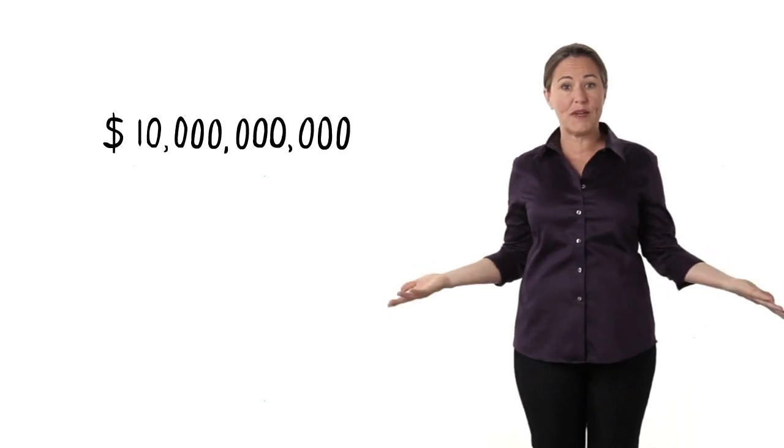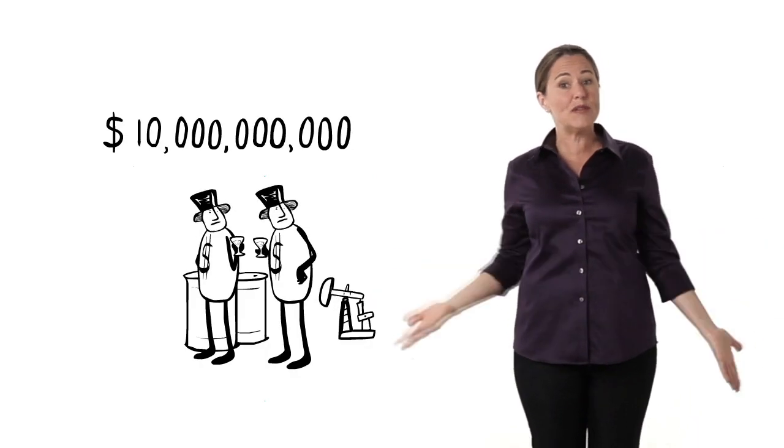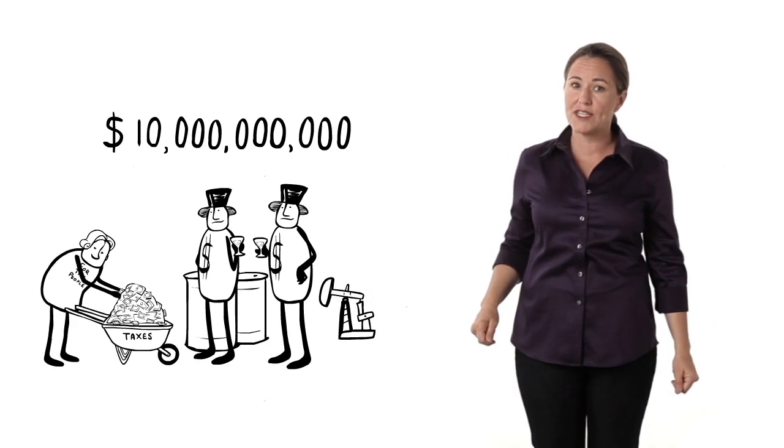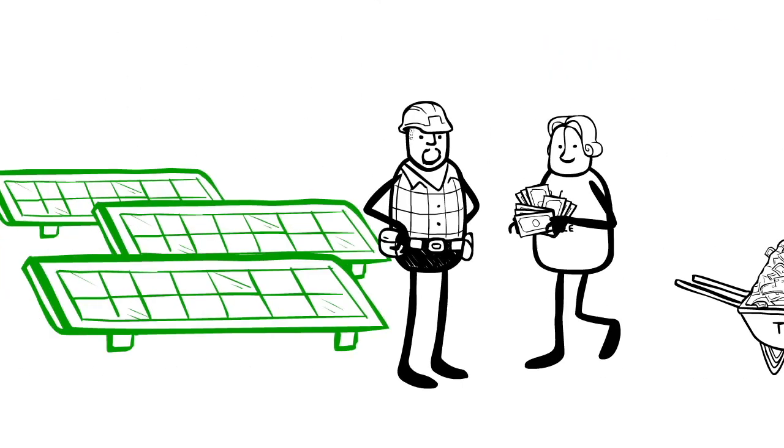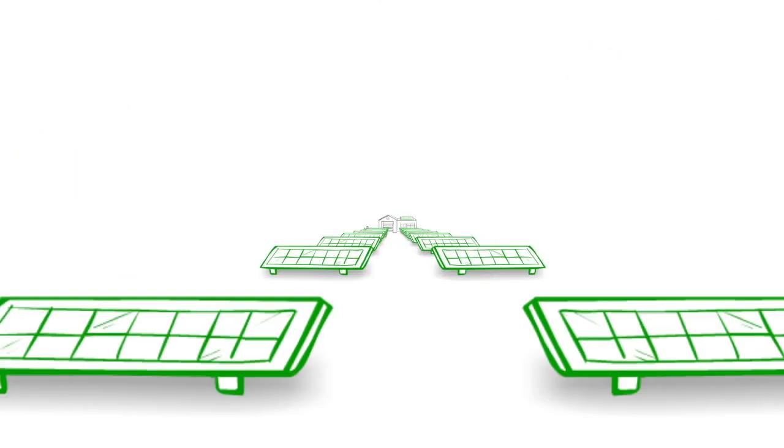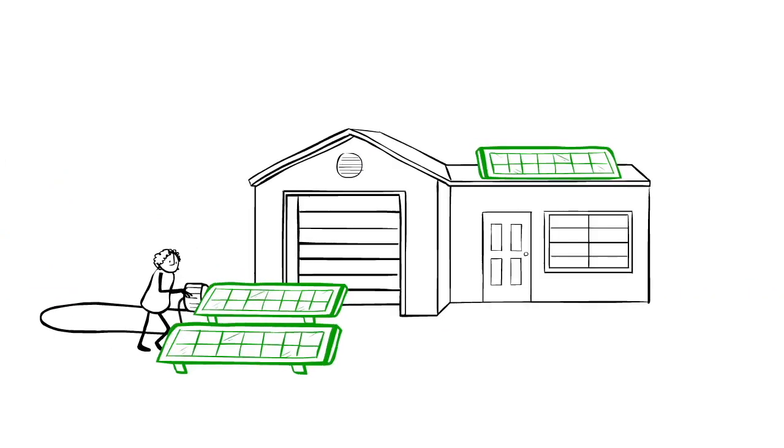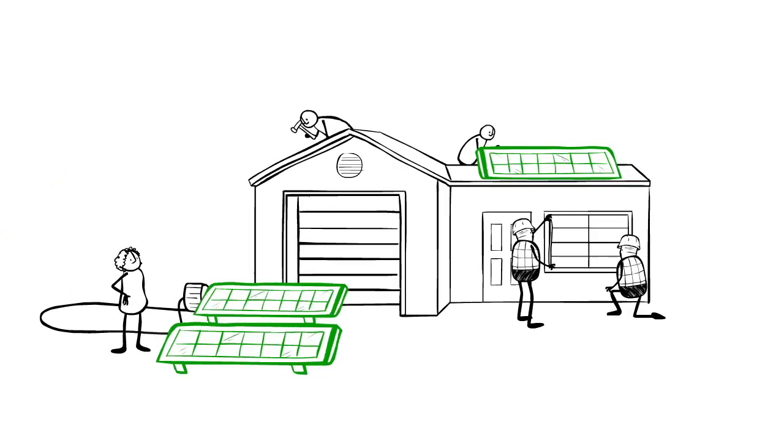We could begin by reinvesting the 10 billion dollars that we spend on oil and gas subsidies into renewable energy and energy efficiency projects. With just half of that amount, we could provide solar energy to about 2 million households. Then use the rest to retrofit half a million homes, creating jobs and saving energy year after year.